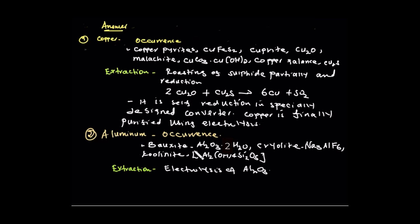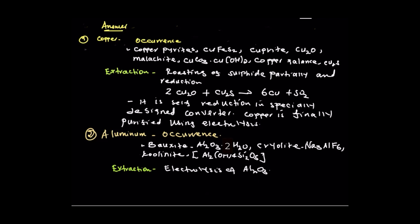For aluminium extraction: aluminium oxide is the ore. Cryolite — a compound of sodium, aluminium, and fluorine — is added. The aluminium oxide is dissolved in molten cryolite and subjected to electrolysis.